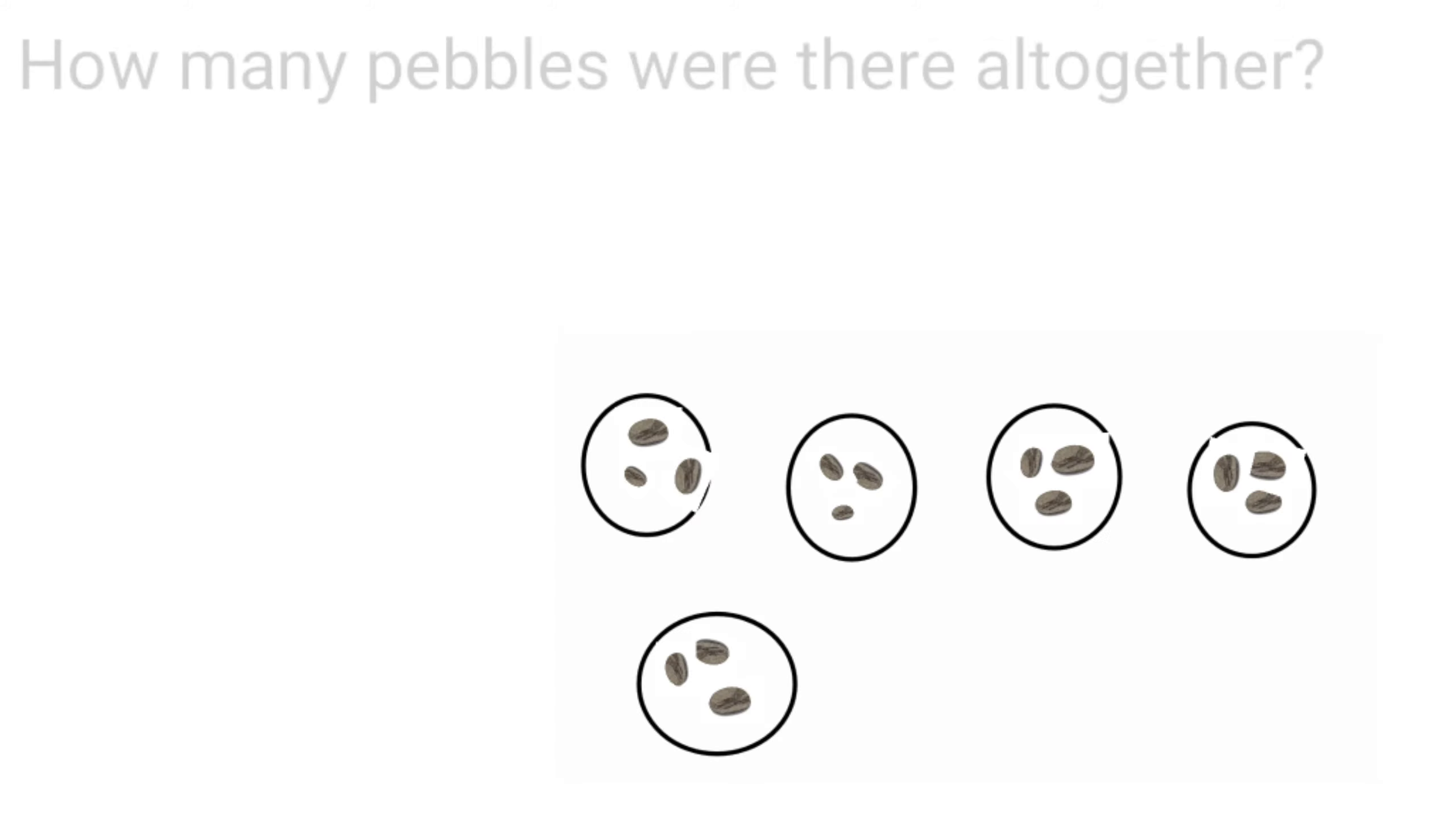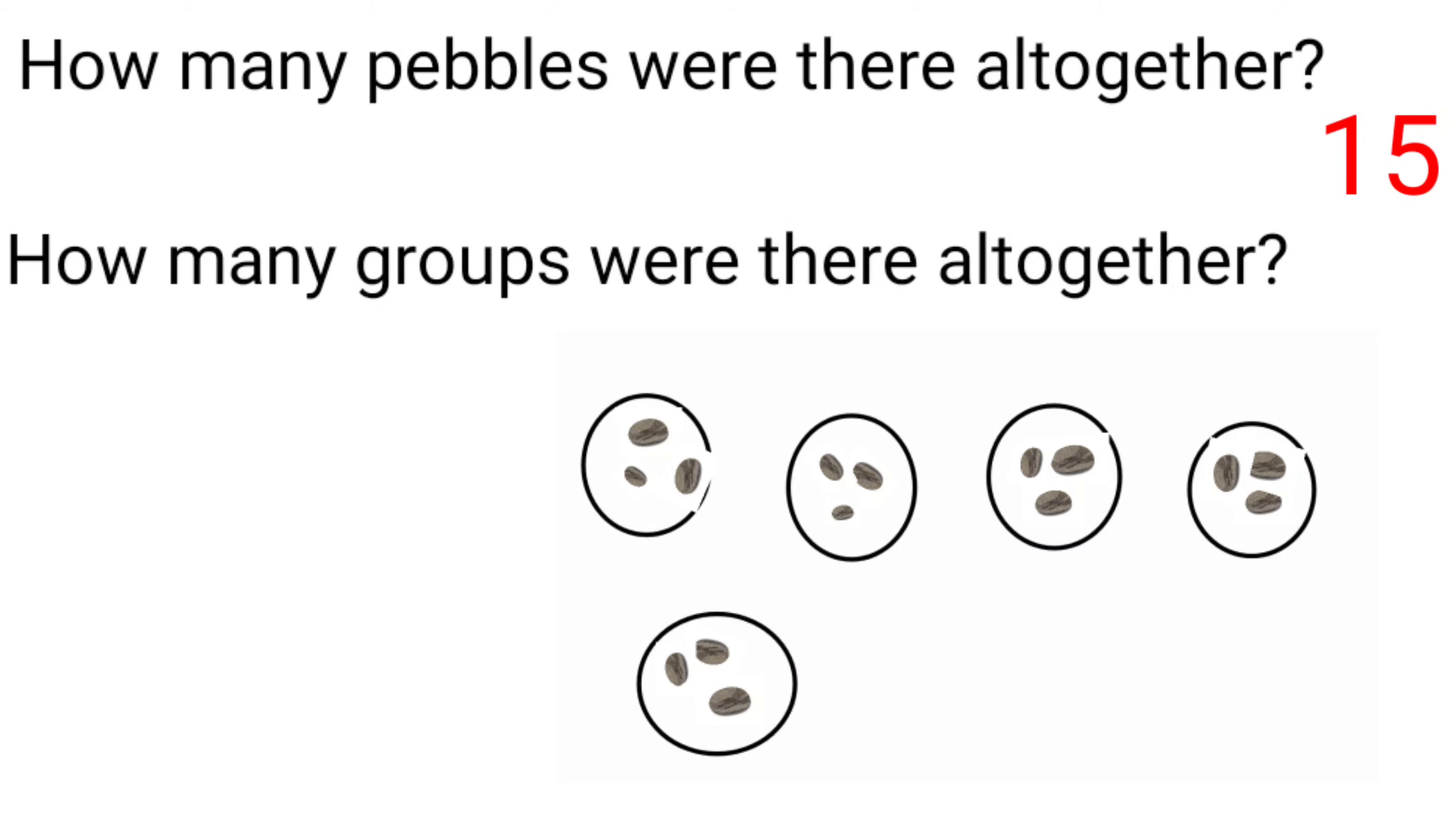So, let me ask you, how many pebbles were there all together? There were 15 pebbles. Now, how many groups were there all together? How many groups are there? 1, 2, 3, 4, 5. 5 groups.